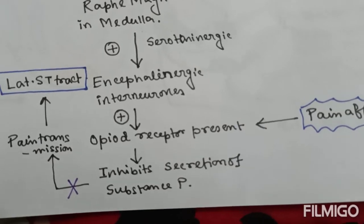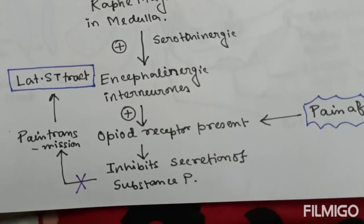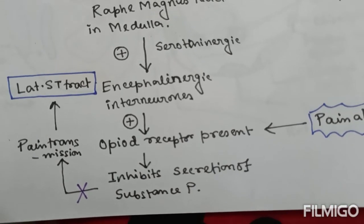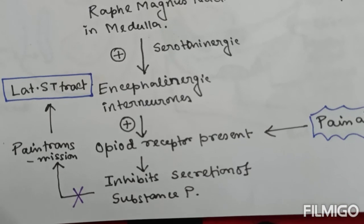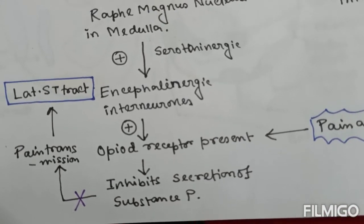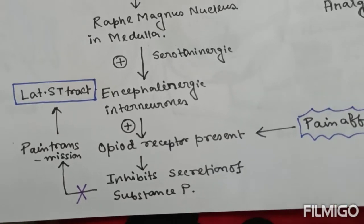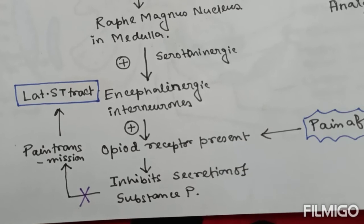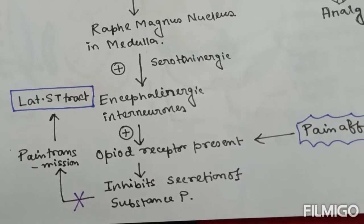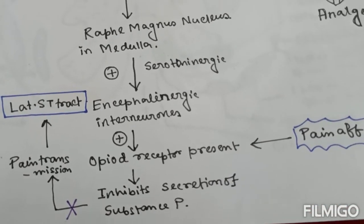These enkephalinergic interneurons ultimately end on the opioid receptors present near the pain afferents, and thereby the release of opioid peptides — enkephalin, endorphin, or dynorphin — inhibits the secretion of substance P, and thereby pain transmission is obstructed, which would occur via the lateral spinothalamic tract. So the opioid peptides here inhibit the neurotransmitter responsible for pain transmission, thereby causing an analgesic effect.